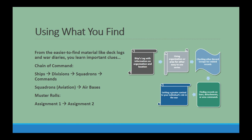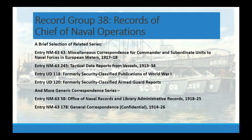For aviation units, you have both the squadron records and the air base records. You can also track an individual's career by following transfers through muster rolls — as your relative moves from station to station or ship to ship, you can follow that career path in addition to what you find in the service record.